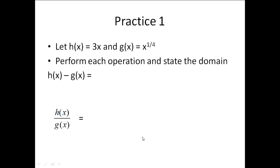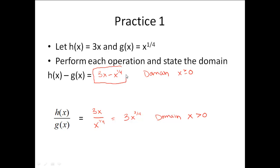Here's a set of practice problems — go ahead and pause the video and see if you can perform the operation and then state the domain. Remember, when looking for the domain, check: are you going to have a problem dividing by 0? Are you going to have any even roots? The first one might have been a little tricky. When you write out 3x minus x to the 1 fourth, there are no like terms here, so that's all the farther it can be simplified. For domain, there's no division, so I don't check dividing by 0. But I do have a fractional exponent with an even denominator — that's the 4th root of x — so x must be greater than or equal to 0.